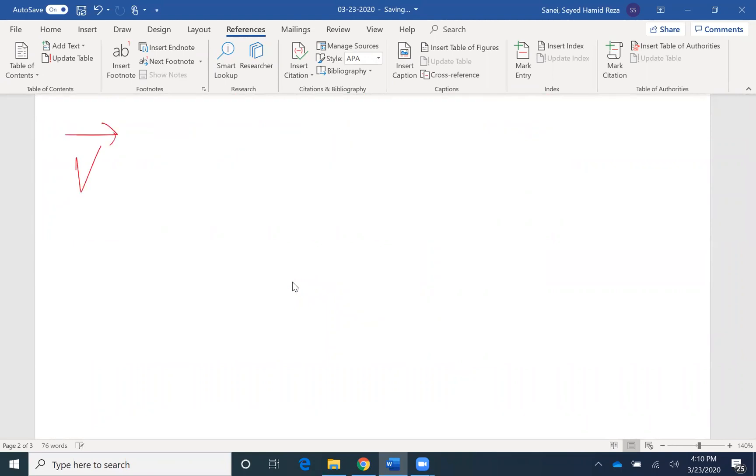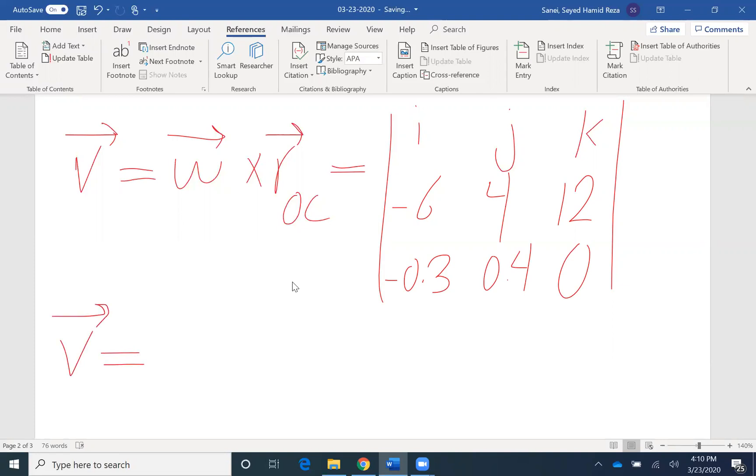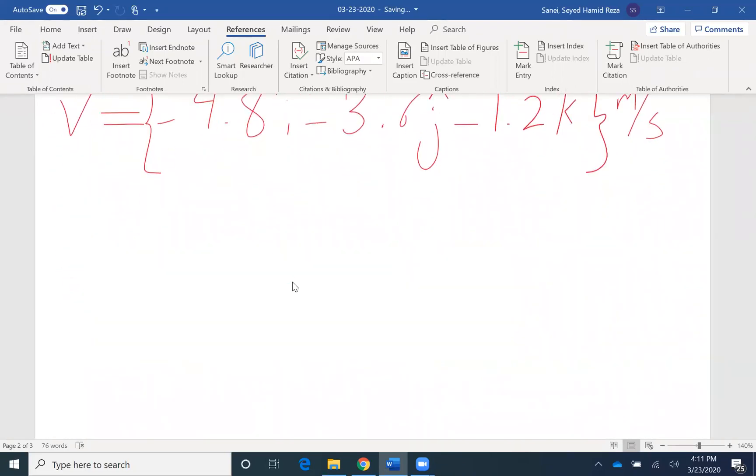So it's omega cross r. I use cross product equation i, j, k. The second row would be the first vector. First vector would be omega, omega would be negative 6, 4, and 12. The second or the third row would be the second vector, which is ROC, which I found to be negative 0.3, 0.4, and 0. If I find velocity here, that would be negative 4.8i, negative 3.6j, and negative 1.2k. And the unit for velocity is meter per second. So I found the first unknown the problem was asking for, which was velocity.